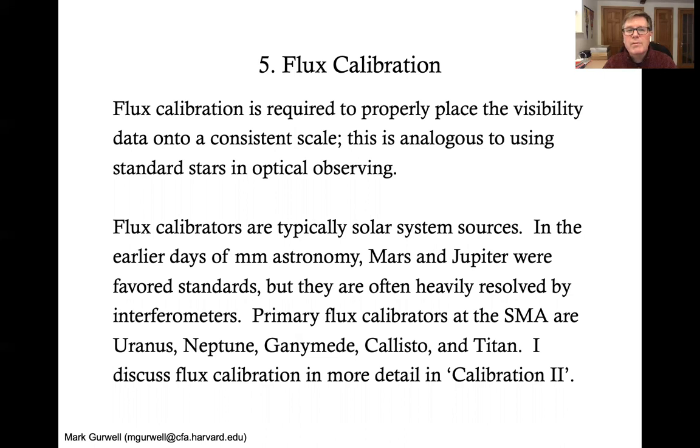So in the early days of millimeter astronomy, Mars and Jupiter were the favorite standards. However, they're actually kind of big, particularly for the SMA, which has resolutions that are three arc seconds down to 0.3 arc seconds, depending on the array that you're in use. And Mars and Jupiter are almost always much, much bigger than that. So at the SMA, we tend to use Uranus, Neptune, and then the Jovian moons Ganymede and Callisto and Titan. I will discuss flux calibration in particular in more detail in calibration two.